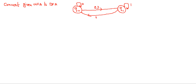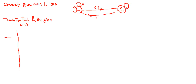So now this is the given NFA. We need to draw the transition table for the NFA. Here the inputs are 0 and 1. Sigma is the alphabet, q is the state. Here q0 and q1 are the states.